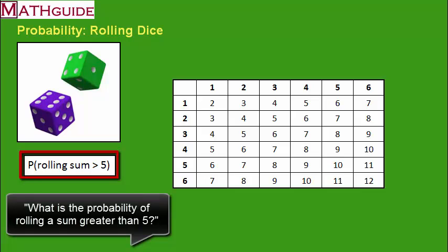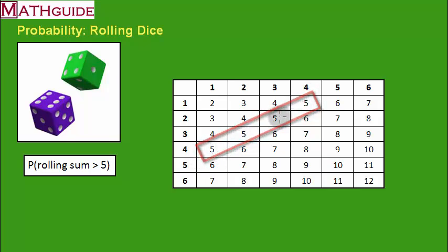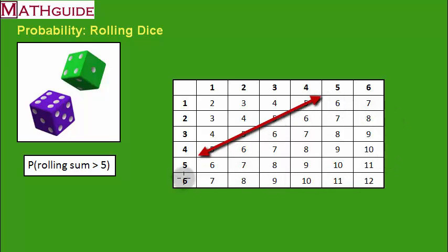Let's figure out the probability of rolling a sum that's greater than five. We're going to look at the table and decide where all the sums greater than five are. You'll notice the sums equal to five run along a diagonal. Everything below this diagonal line represents sums greater than five. Counting those boxes: 1, 2, 3, 4, 5, 6, 7, 8, 9, 10, 11, 12, 13, 14, 15, 16, 17, 18, 19, 20, 21, 22, 23, 24, 25, 26. There are 26 ways to roll a sum greater than five.